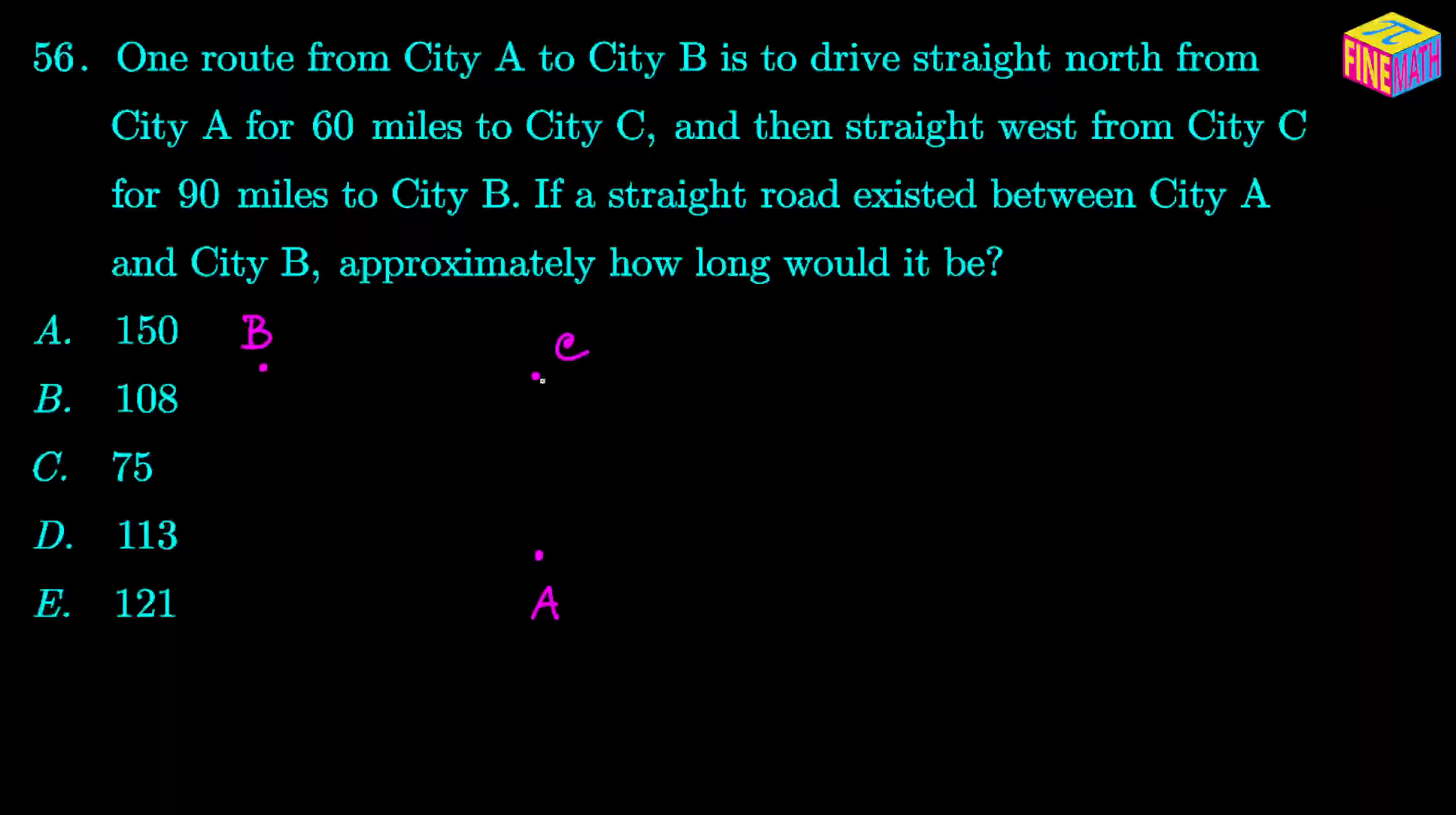Now, what is the distance between A and C? That is 60 miles. So this distance right here, the distance between city A and C is 60 miles.